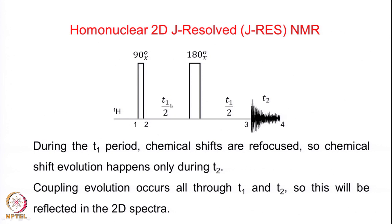The pulse sequence is very similar to the previous ones except that we only have one channel here — the proton channel. The experimental sequence is like the spin echo sequence: it starts with a 90-degree X pulse followed by the T1/2 period, then a 180X pulse followed by another T1/2 period. These two together constitute the evolution period. The 180 pulse is put in the middle of the evolution period, and then detection happens during the T2 period. The time points 1, 2, 3, 4 will be used when we calculate the product operators at the different time points.